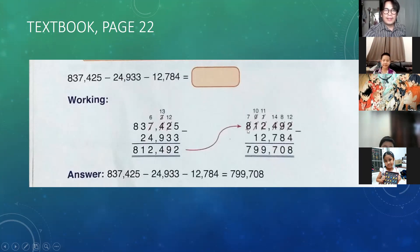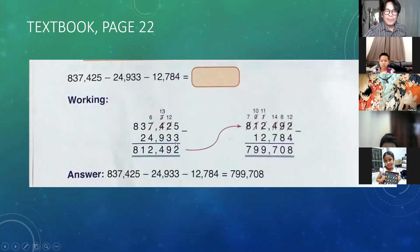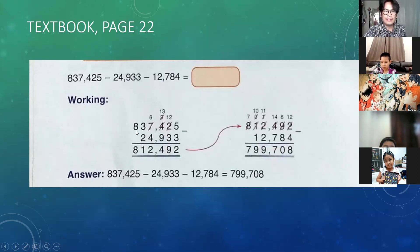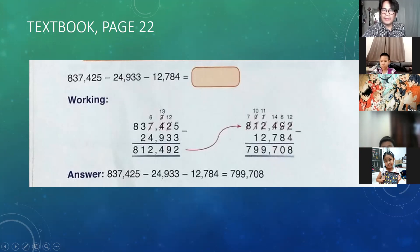So: 5 minus 3 equals 2. Then 2 becomes 12 because 2 minus 3 cannot be subtracted — 2 is smaller than 3, so we borrow from 4; 4 becomes 3. 12 minus 3 equals 9. 3 minus 9 cannot be subtracted — 3 is smaller than 9, so 3 becomes 13; we borrow 1 from 7, so 7 becomes 6. 13 minus 9 equals 4. Then 3 minus 4: 3 becomes 12 — we borrow 1 from 9, so 9 becomes 8. 12 minus 4 equals 8. 8 minus 8 equals 0.